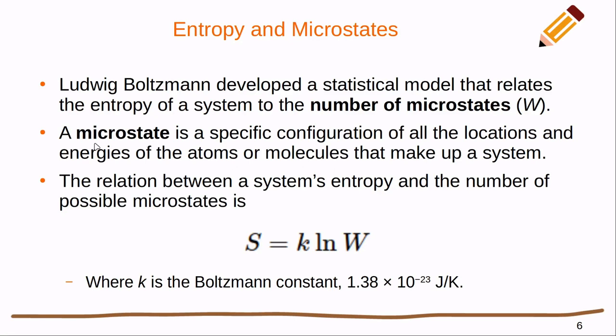More than one microstate could wind up being a specific state that we've talked about thus far. For instance, when we were talking about gases, we said that a state had a specific pressure, volume, and temperature. There are numerous different microstates that will give you that same pressure, volume, and temperature. The relation between a system's entropy and the number of possible microstates is given by S equals k ln W, where k is the Boltzmann constant, 1.38 times 10 to the negative 23 J/K, times the natural log of the number of microstates.